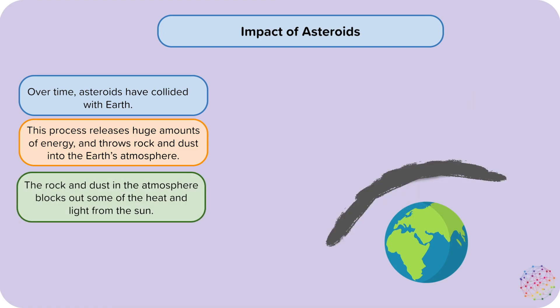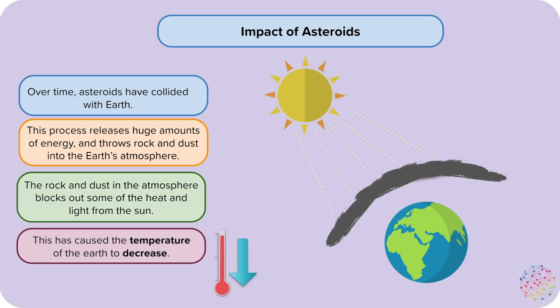The rock and dust in the atmosphere block out some of the heat and light from the sun. This has caused the temperature of the Earth to decrease. Please note that the reduction of heat from the sun is much greater than the heat given off from the collision of the asteroid with Earth.